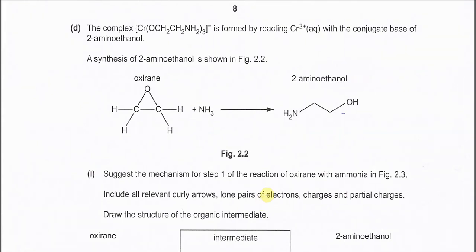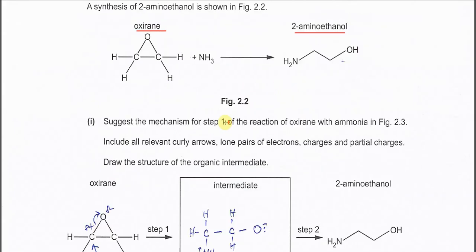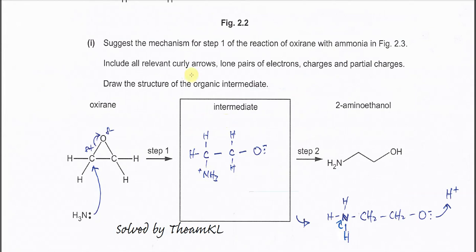For part d, step one: you have to draw a mechanism. The reaction starts with the oxirane reacting with ammonia to form 2-aminoethanol. Suggest the mechanism for step one, including all relevant arrows, lone pairs, charges, and partial charges.